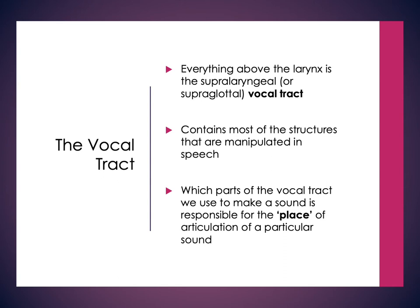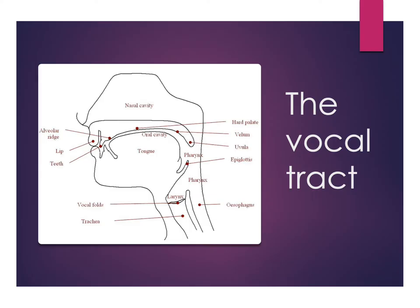The different places located within the vocal tract — those different anatomical places — are what we use to describe the place of articulation for a particular sound. Articulation is how we're actually making that sound. If we go back to that little linguist drawing of the vocal tract, we can see all of those different little spots that are labeled on this tract.